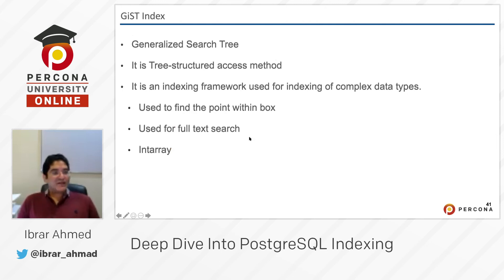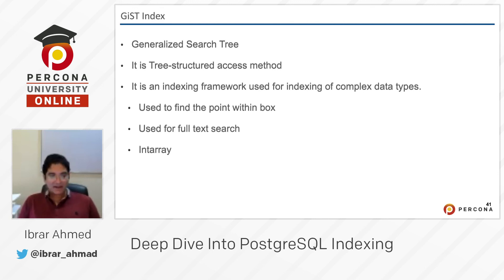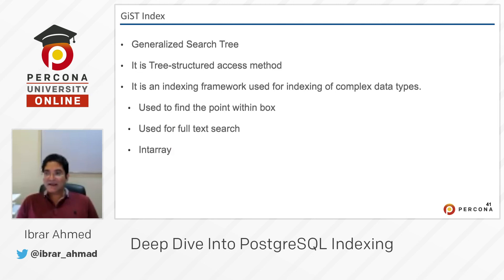The next index is GiST — Generalized Search Tree. It is a tree-structured access method and an indexing framework used for indexing complex data types. For example, it is used to find a point within a box, used for full-text search, and also used for integer arrays.